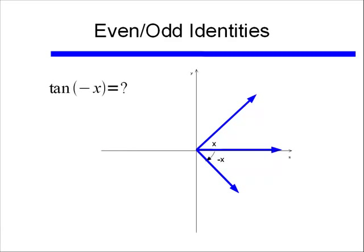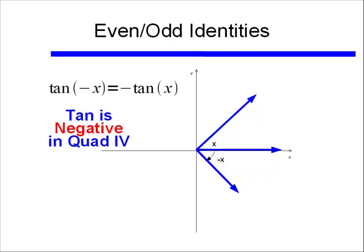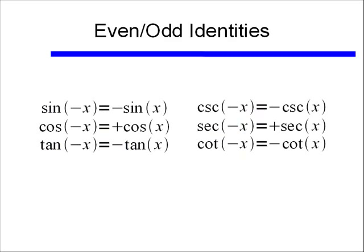Tangent of negative X: since tangent is negative in quadrant 4, like sine, tangent of negative X equals negative tangent X. Cosecant, secant, and cotangent follow their reciprocal functions — sine, cosine, and tangent — respectively.